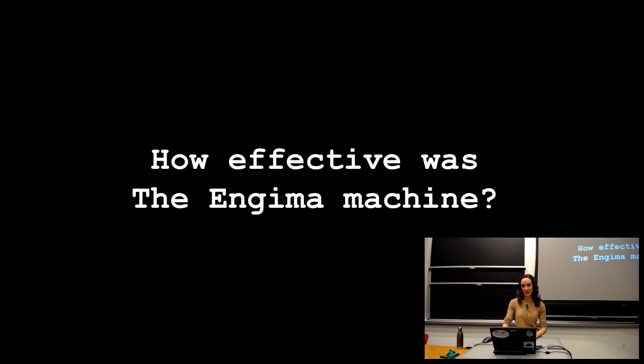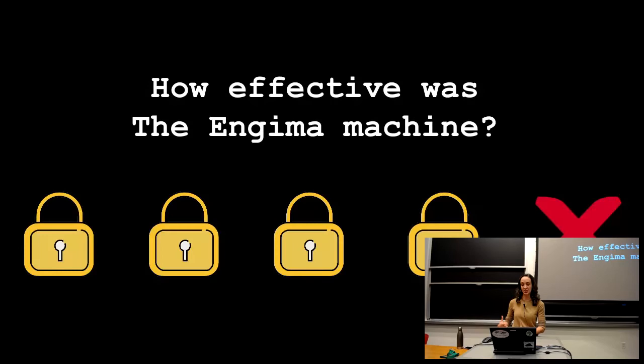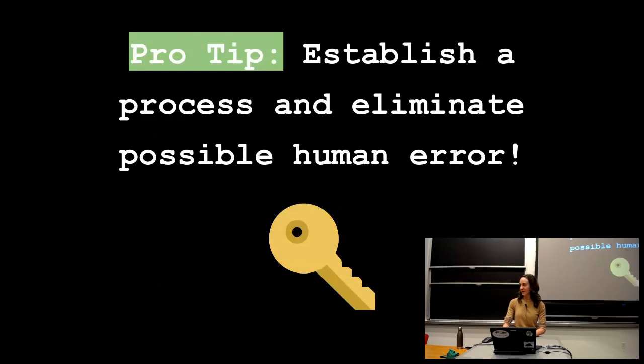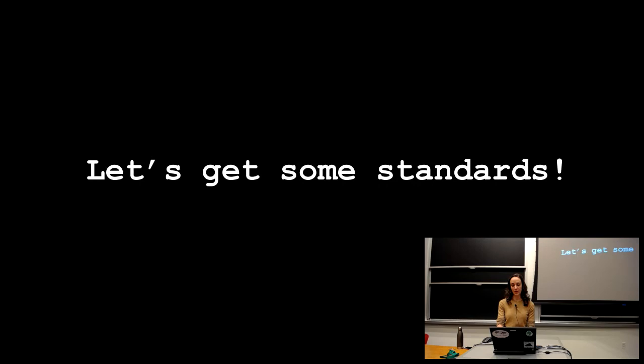So how effective was the Enigma machine? Very effective. It's kind of getting towards a more modern form of encryption, where you really need substantial computing power in order to break it. So I'm going to give it four out of five locks. And the other thing is, this is bringing us to one of our pro tips. Part of the main failings of the Enigma machine were the lack of process of some of the human errors that we talked about before. So a good pro tip in security, it's important to have a process and try to eliminate possible sources of human error.